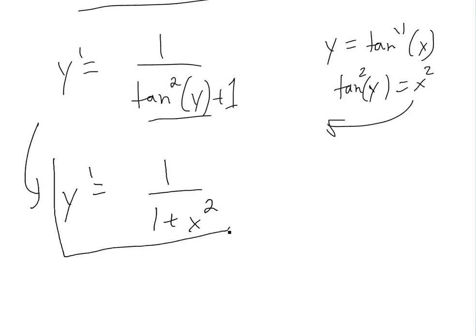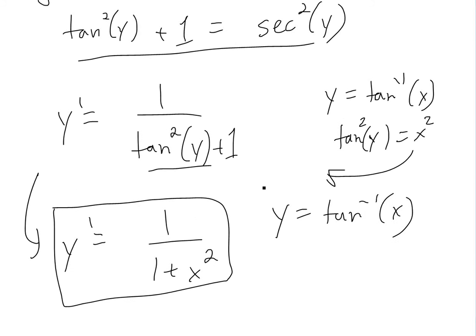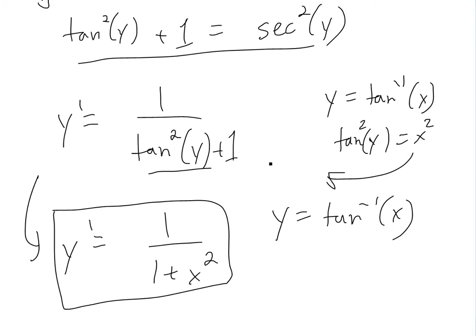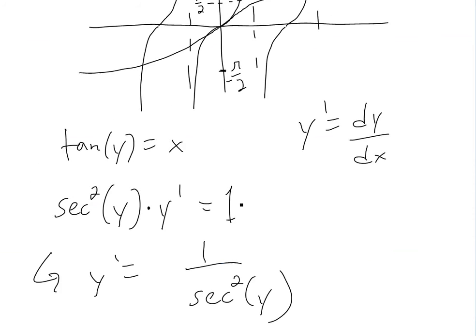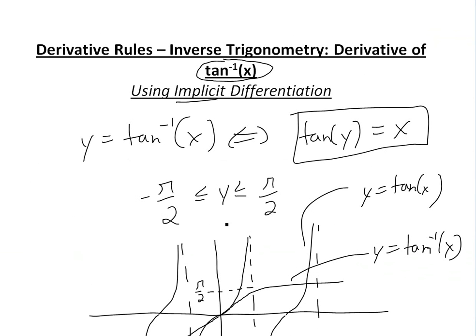And that's basically all for today. The derivative of y equals inverse tan of x is just 1 divided by 1 plus x squared. Hopefully you learned something, and stay tuned for another Math Easy Solution.